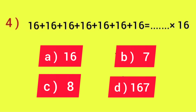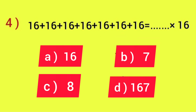Our next question: 16 plus 16 plus 16 plus 16 plus 16 plus 16 plus 16 plus 16 plus 16 plus 16 is equal to dash into 16. As you know, repeated addition of a number can also be written in multiplication form. Let's count how many times 16 is added: 1, 2, 3, 4, 5, 6 and 7. So 16 is added 7 times, and we can write it as 7 into 16. Our correct answer is option B, 7.